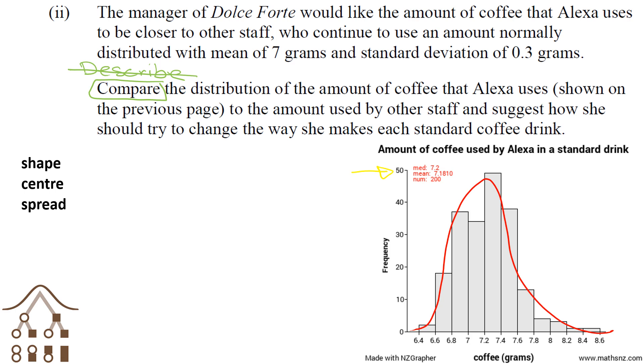The last thing we should talk about is the spread. For the other staff, the standard deviation is 0.3 grams. We need to compare that to what Alexa is doing. We can't calculate the standard deviation exactly from this data, but what we can look at is the range. Because it's nearly normally distributed, we can say that the range is approximately 6 standard deviations.